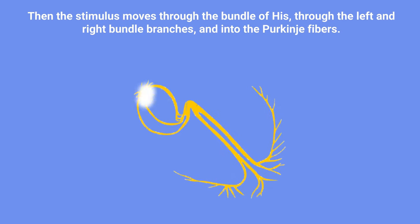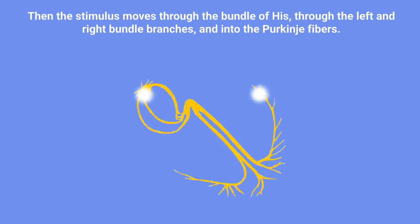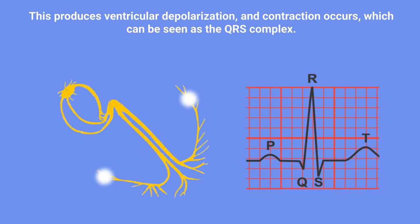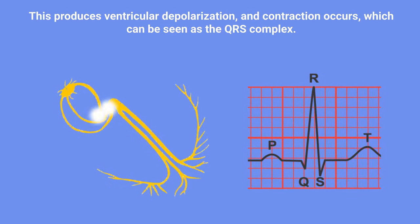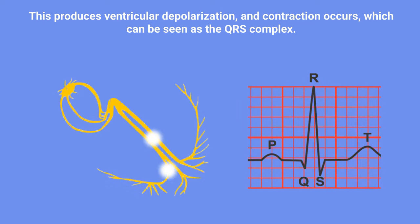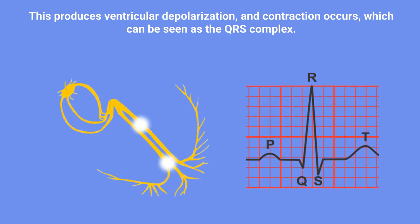The stimulus then moves through the bundle of His, through the left and right bundle branches, and into the Purkinje fibers. This produces ventricular depolarization and contraction, which can be seen as the QRS complex on the EKG reading.